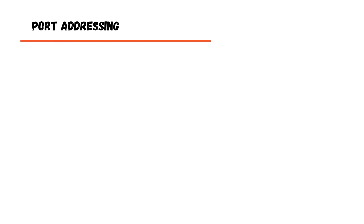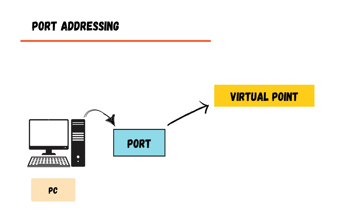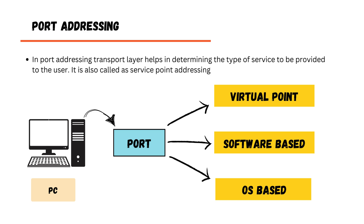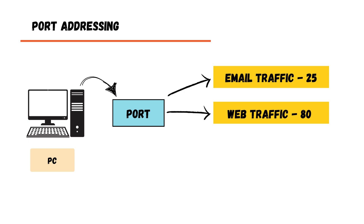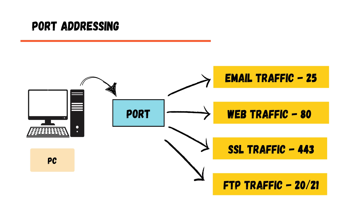The first functionality of the transport layer is port addressing. A port is a virtual point where a network connection starts or terminates. Ports are software-based and handled by the operating system. Each port is associated with a specific service or application process. With the help of ports, computers are able to segregate different kinds of traffic — email traffic goes to a different port, web browsing to another, secure traffic to another, and FTP traffic to yet another.